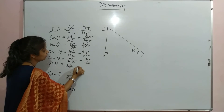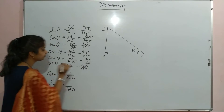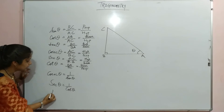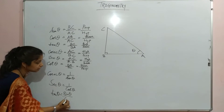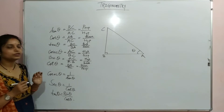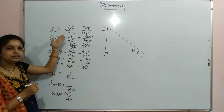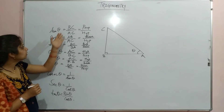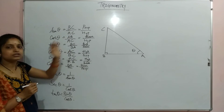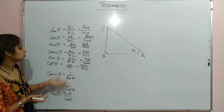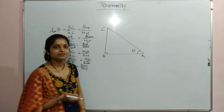One more thing: tangent is also the ratio of sine upon cosine. You can verify this — sine is BC upon AC and cosine is AB upon AC, so AC gets cancelled, giving BC upon AB. This is one more relationship you have to learn. Thank you.